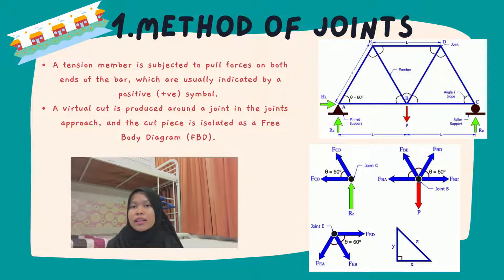For this strategy, here are some simple steps to follow. First, create the free body diagram first. Second, figure out how to solve the reactions of the given structure. Then, choose a joint with the fewest unknowns, maximum two, and analyze it with Fx equals zero, Fy equals zero. Then, move on to the remaining joints with the fewest unknowns possible.